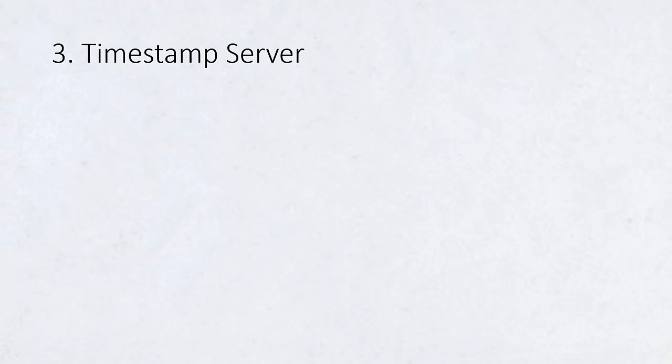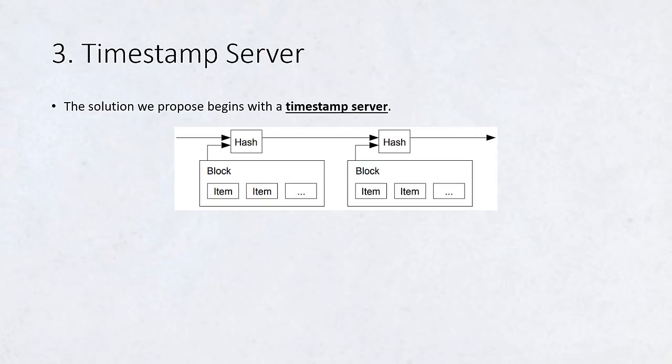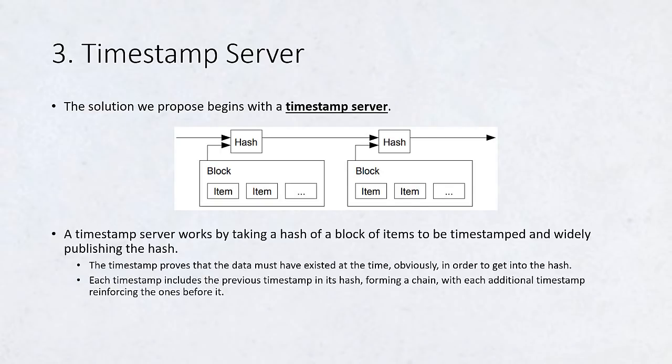Timestamp Server. The solution we propose begins with a timestamp server. A timestamp server works by taking a hash of a block of items to be timestamped and widely publishing the hash, such as in a newspaper or Usenet post. The timestamp proves that the data must have existed at the time, obviously, in order to get into the hash. Each timestamp includes the previous timestamp in its hash, forming a chain, with each additional timestamp reinforcing the ones before it.